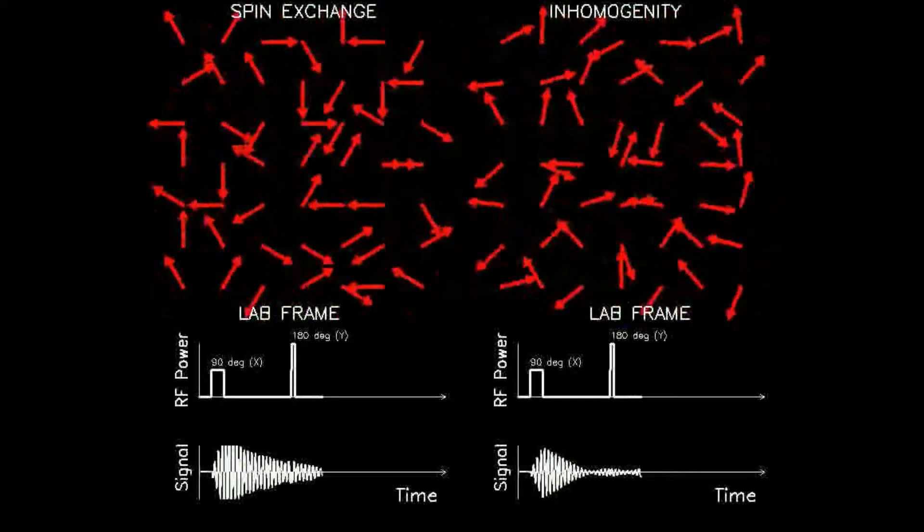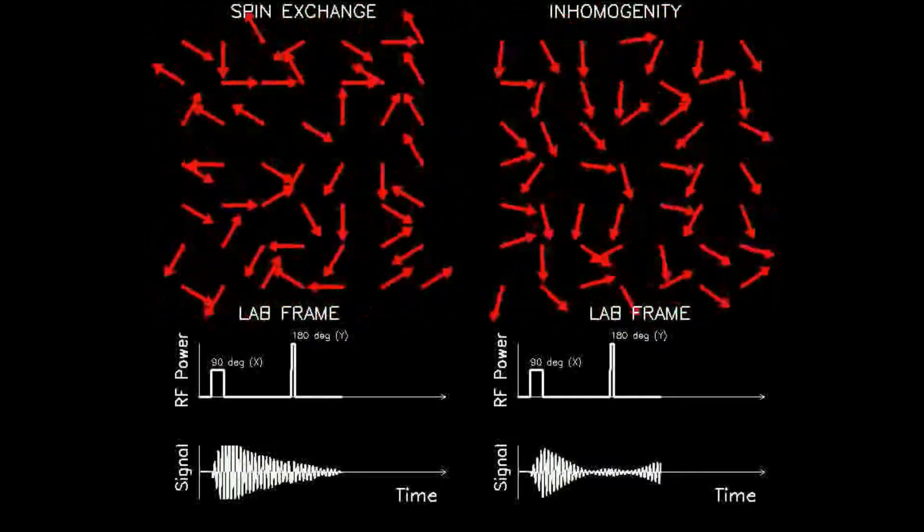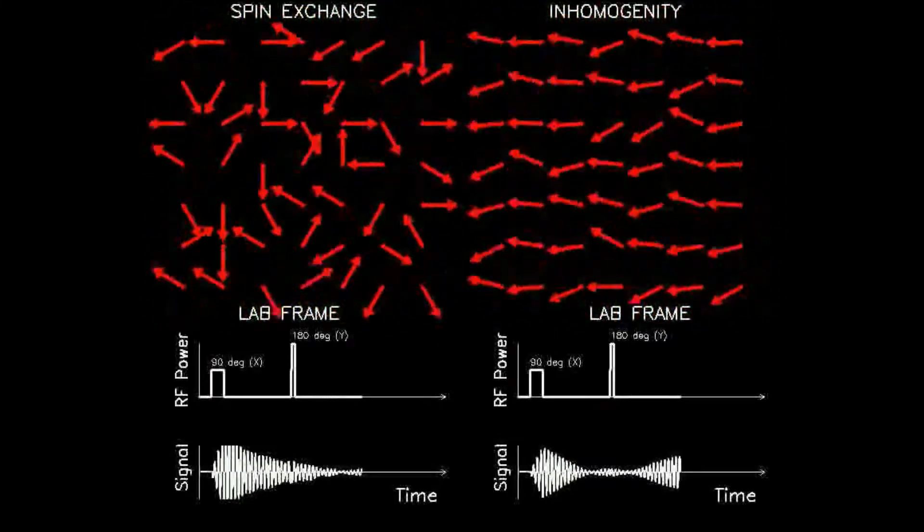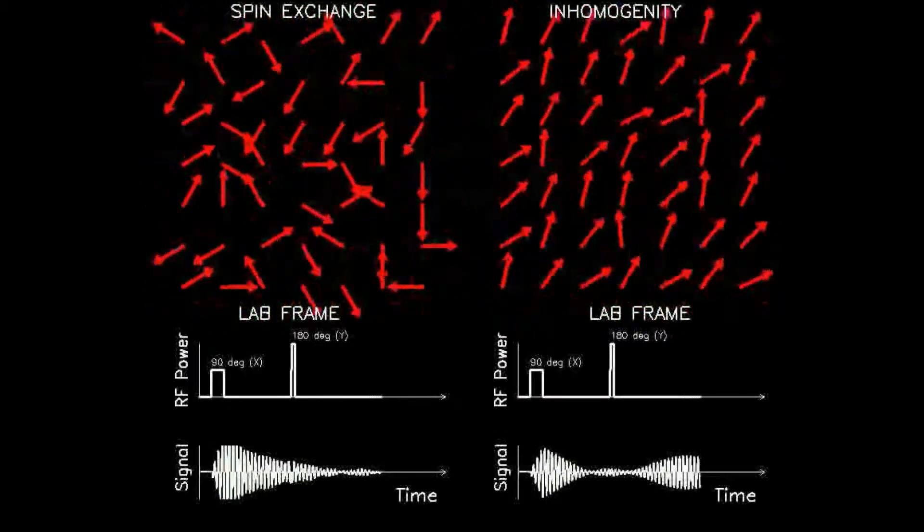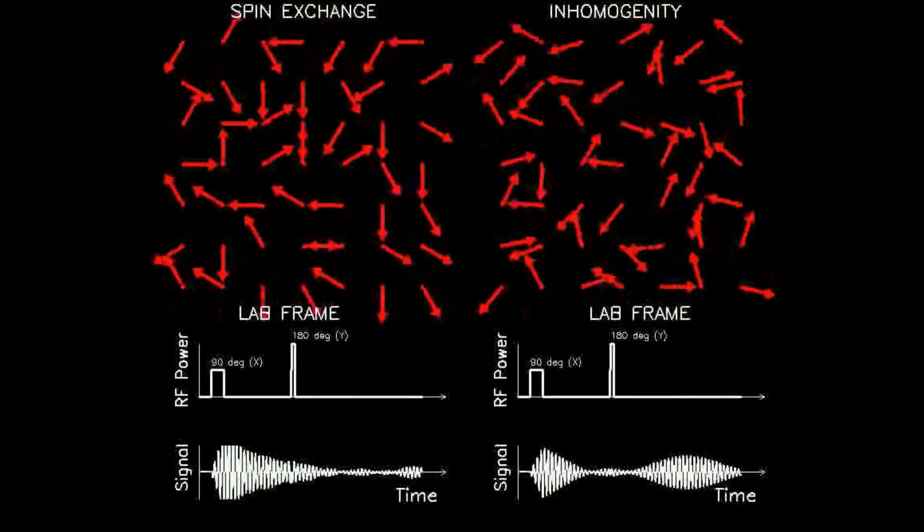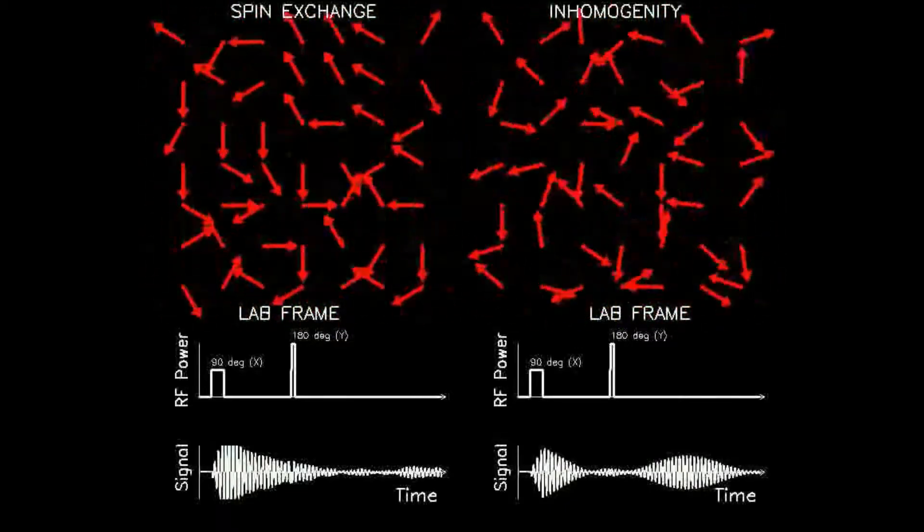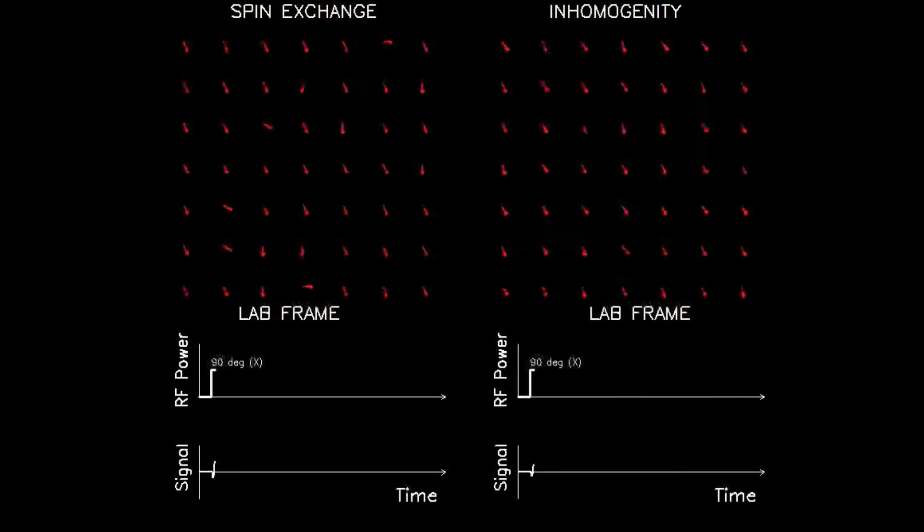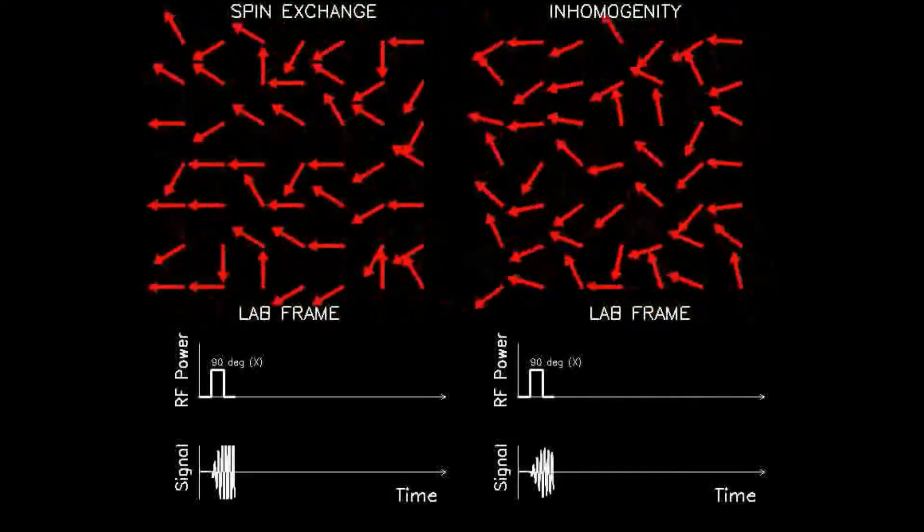Loosely, this new 180 degree flip has the effect of reversing the spins, such that any previous spins that were advanced are now retarded by the same amount and vice versa. At this point, all the spins appear dephased and there is little signal. Then something magical happens.